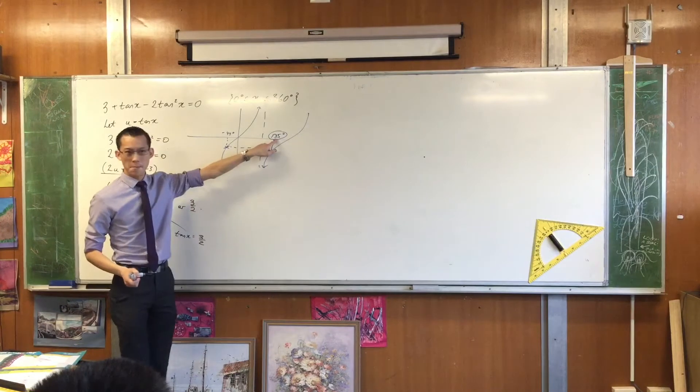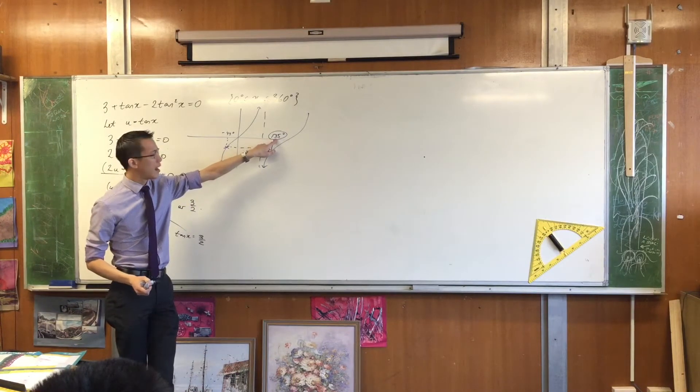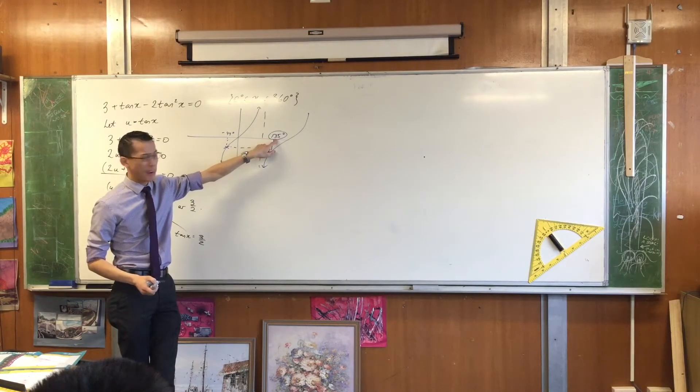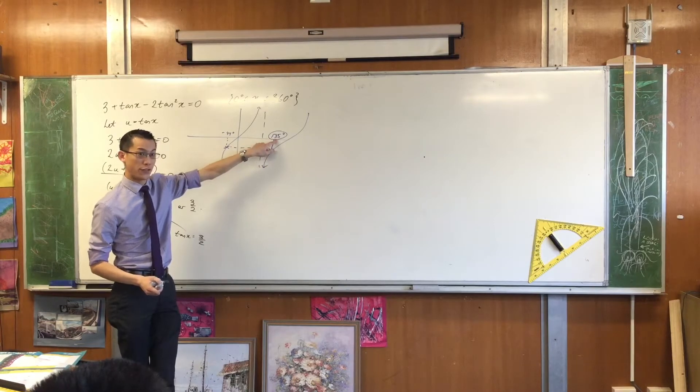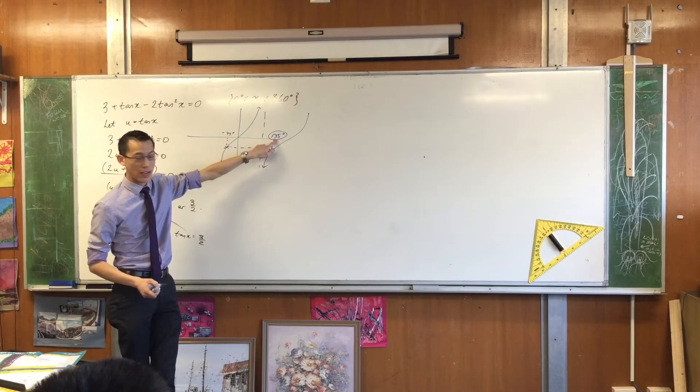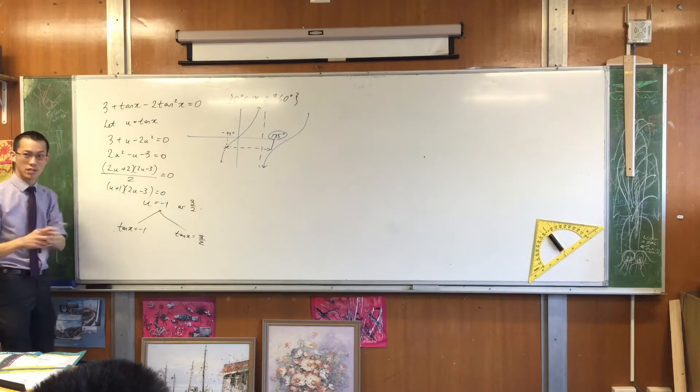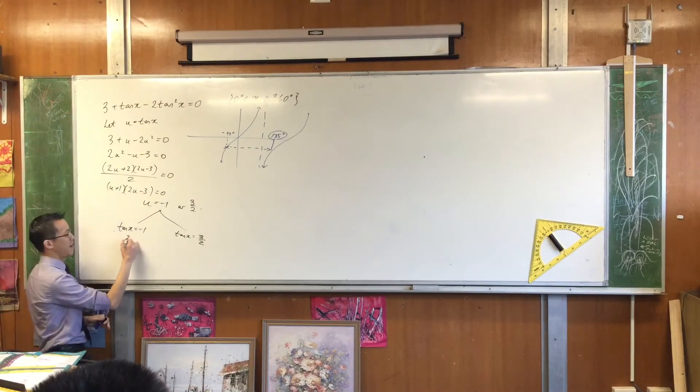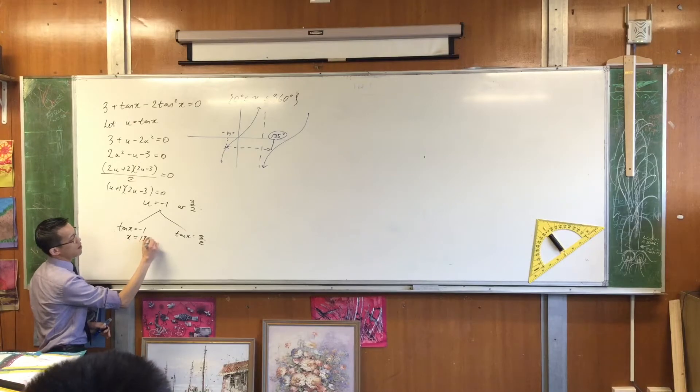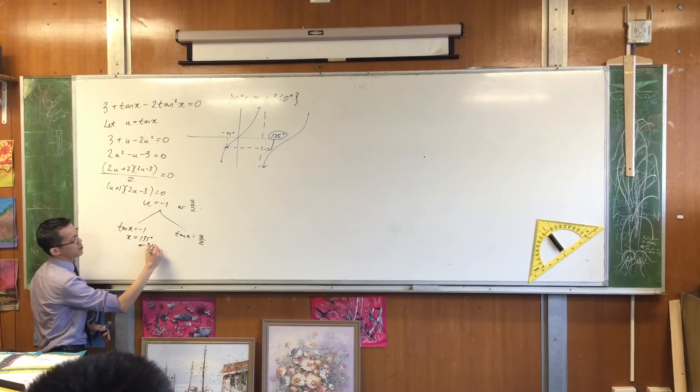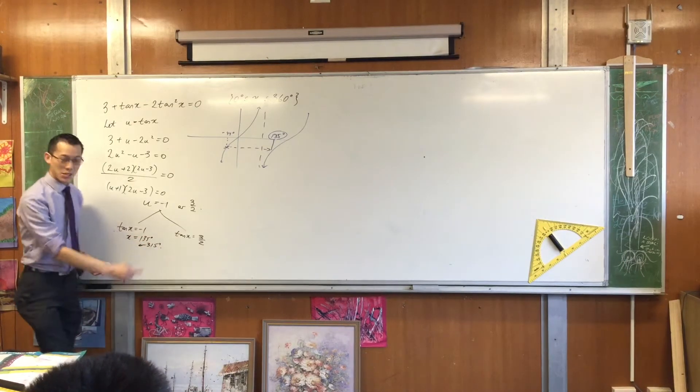135. So there's one of my solutions. That's inside the domain. But I can keep playing this trick, right? I can go forward another 180 degrees. If I go forward again, what will that take me to? What value? 315. If I add 180 to this, I'm pretty sure I get 315 degrees, right? And that's also in the domain. Do you agree with that? They're both good solutions. So I'll write both of those down.